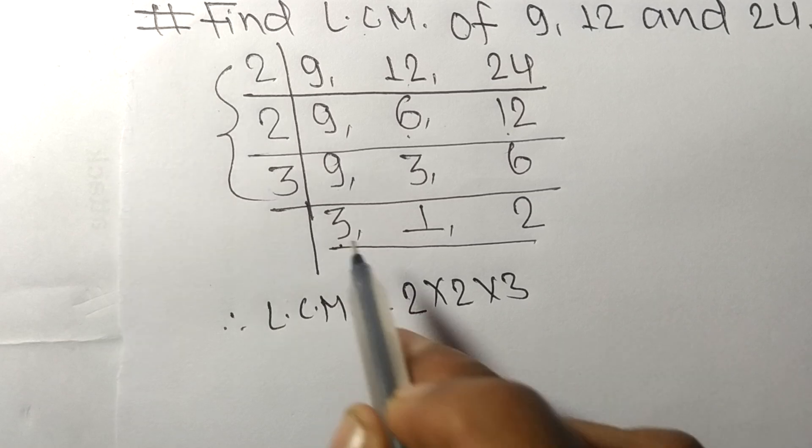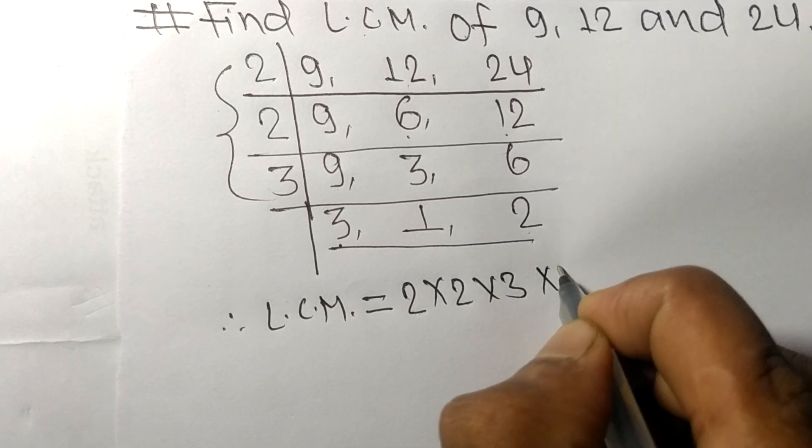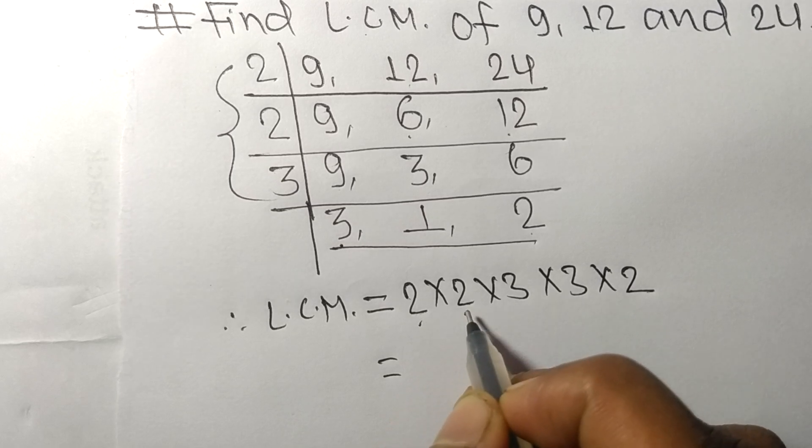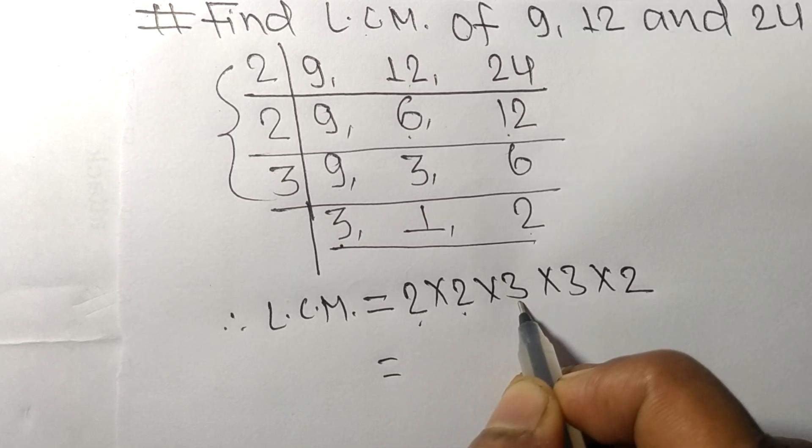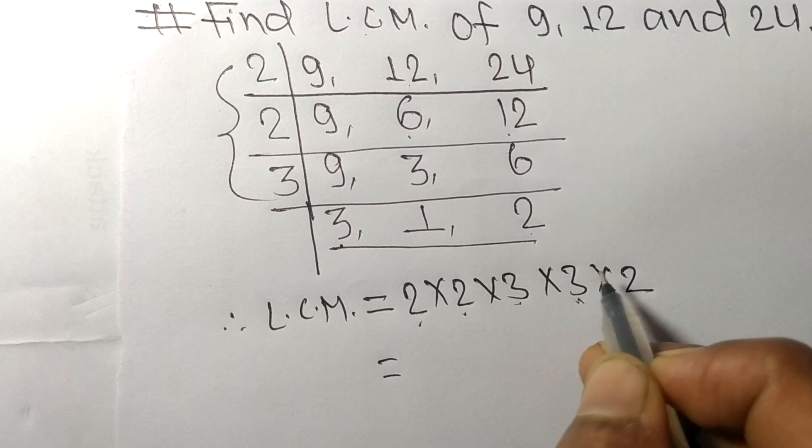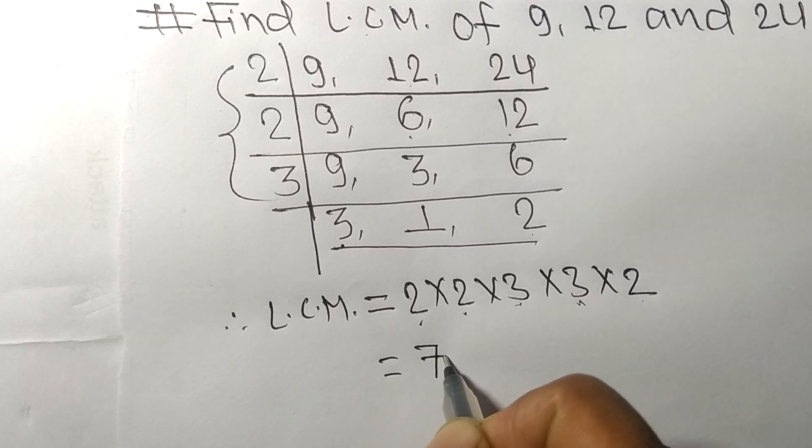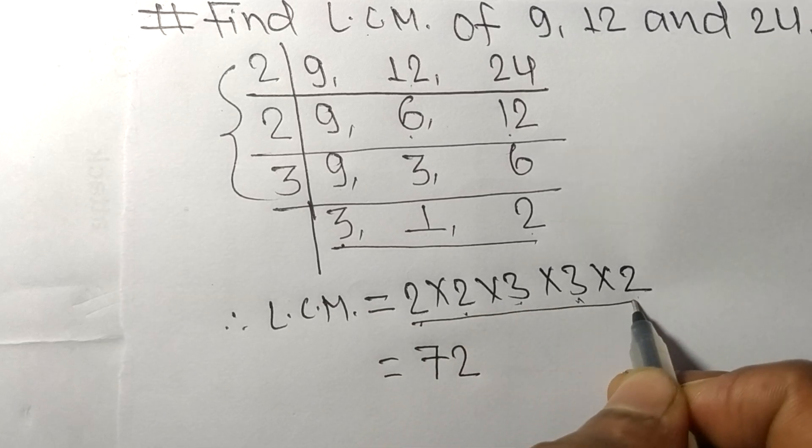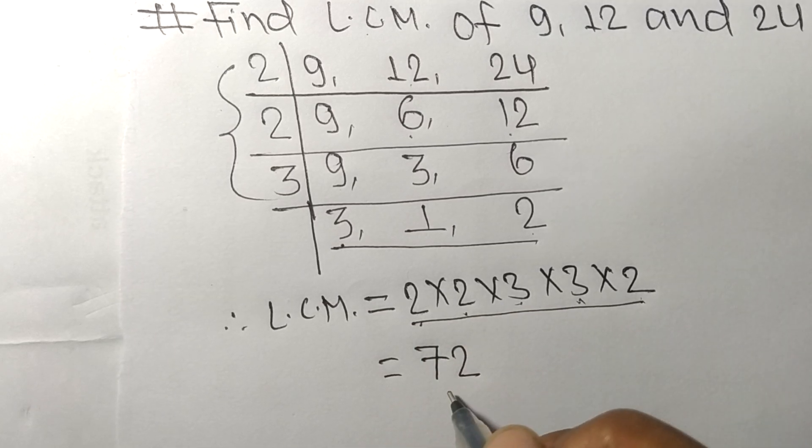3 and 2. 2 times 2 equals 4, 4 times 3 equals 12, 12 times 3 equals 36, 36 times 2 equals 72. So by multiplying all these numbers we got 72.